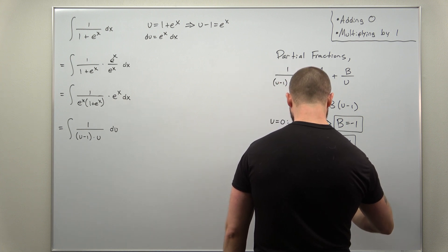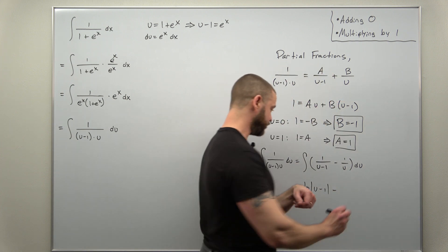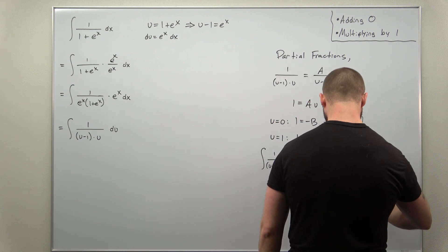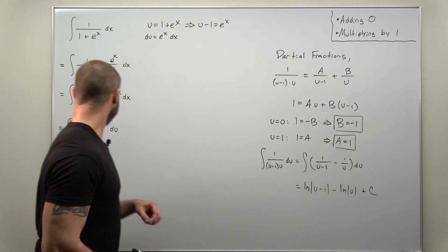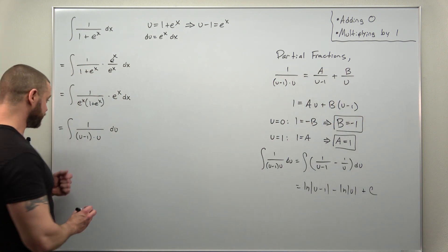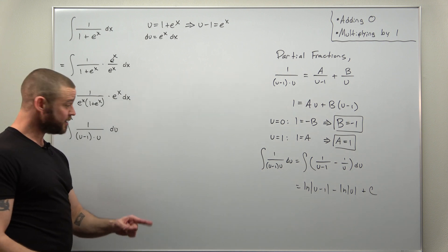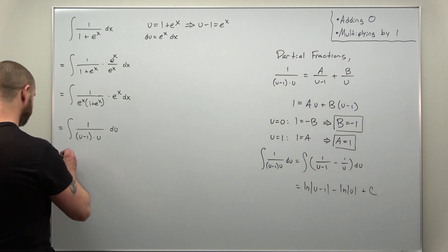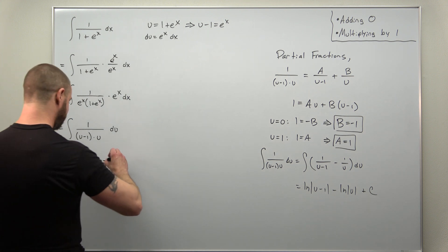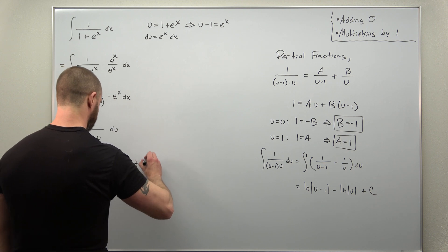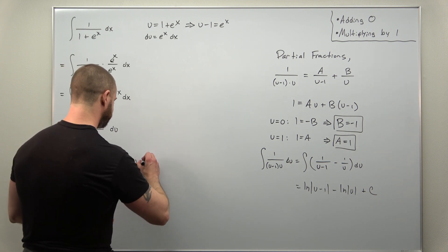And that is our integral here, which we just evaluated with the partial fraction decomposition. So we have it as ln of u minus one minus ln of u, plus our integration constant.